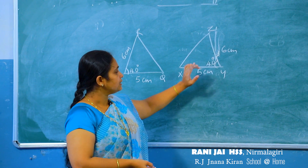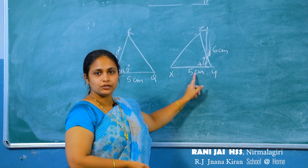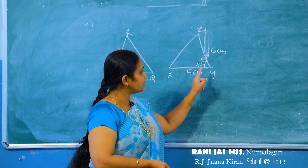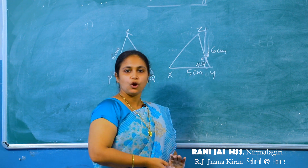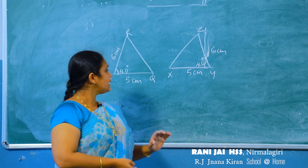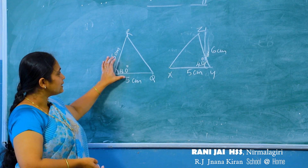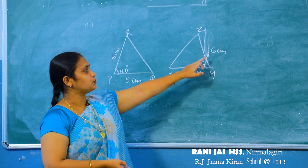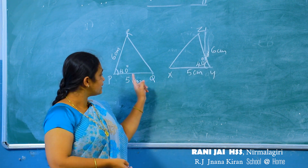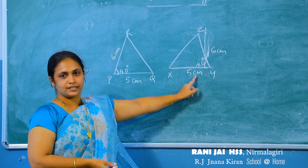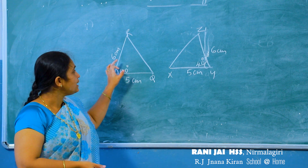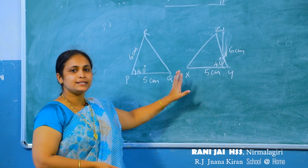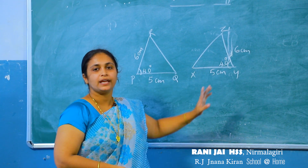In this second triangle, the sides are XY equal to 5 centimeter, ZY equal to 6 centimeter, and the angle between these two sides is also 40 degrees. So in these two triangles, the two sides are equal — 6 centimeter and 6 centimeter, 5 centimeter and 5 centimeter — and the angle between these two equal sides is also equal.